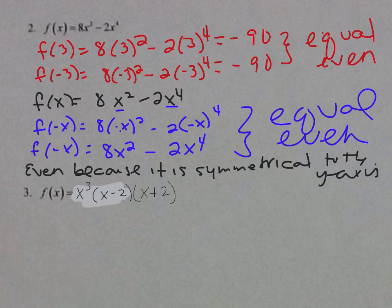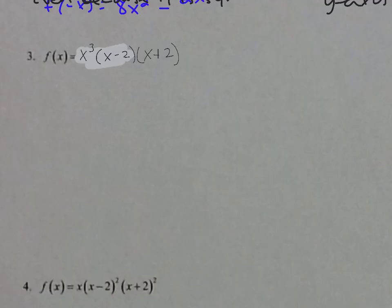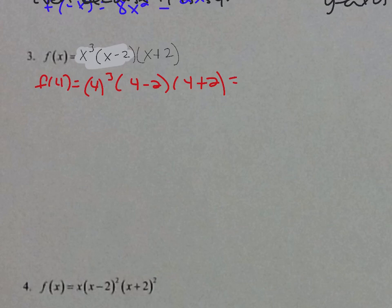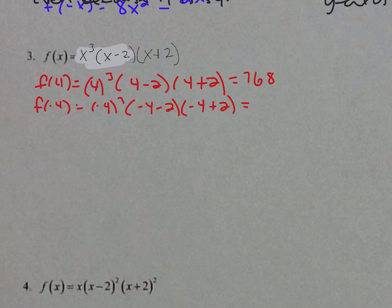Number three: f(x) = x³(x − 2)(x + 2). Pick f(4): 4³ × (4 − 2) × (4 + 2) = 768. Now f(negative 4): (negative 4)³ × (negative 4 − 2) × (negative 4 + 2) = negative 768. These are opposites, so opposites means odd.